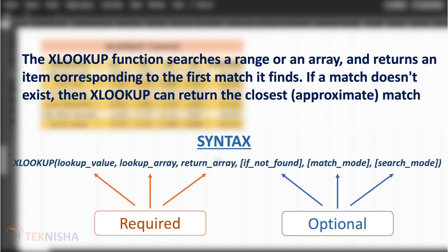The XLOOKUP function searches a range or an array and returns an item corresponding to the first match it finds. If a match doesn't exist, XLOOKUP can return the closest, that is, an approximate match. The syntax has six arguments in total, of which three are required and three are optional. I will explain the XLOOKUP function and all its options with the help of an example.